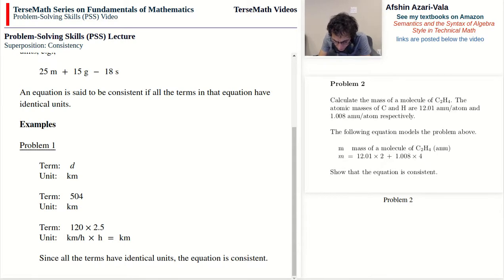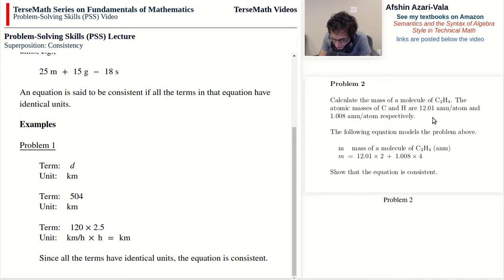Okay, let's take a look at problem number two now. Calculate the mass of a molecule of C2H4. The atomic masses of C and H are 12.01 amu per atom and 1.008 amu per atom respectively. The following equation models the problem above: M is the mass of a molecule of C2H4 in amu, and M is equal to 12.01 times 2 plus 1.008 times 4. Show that the equation is consistent.